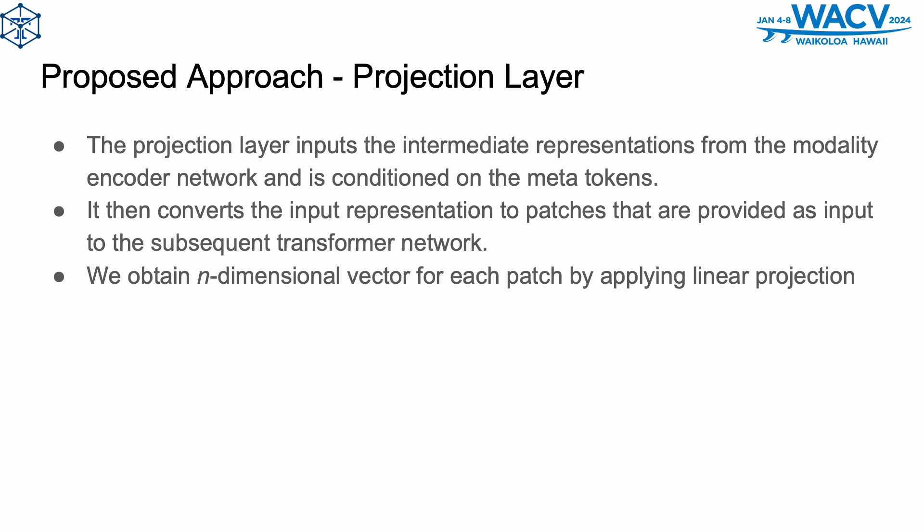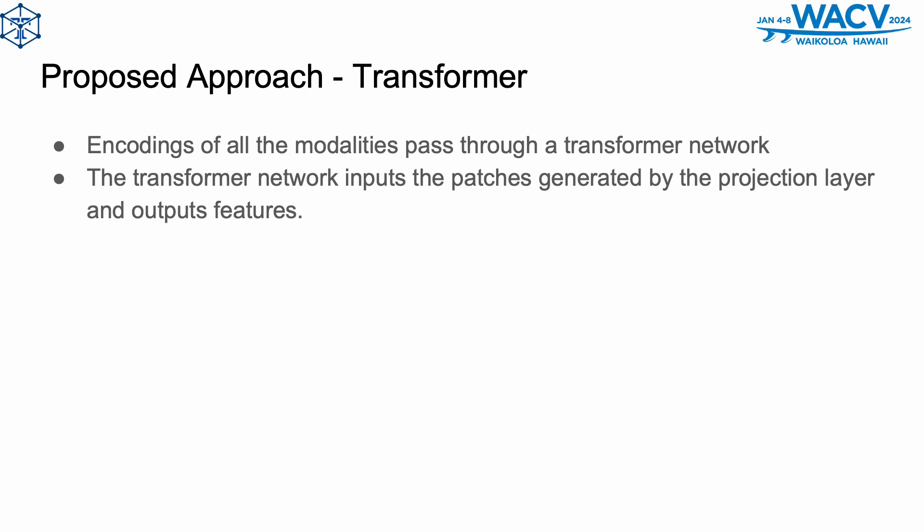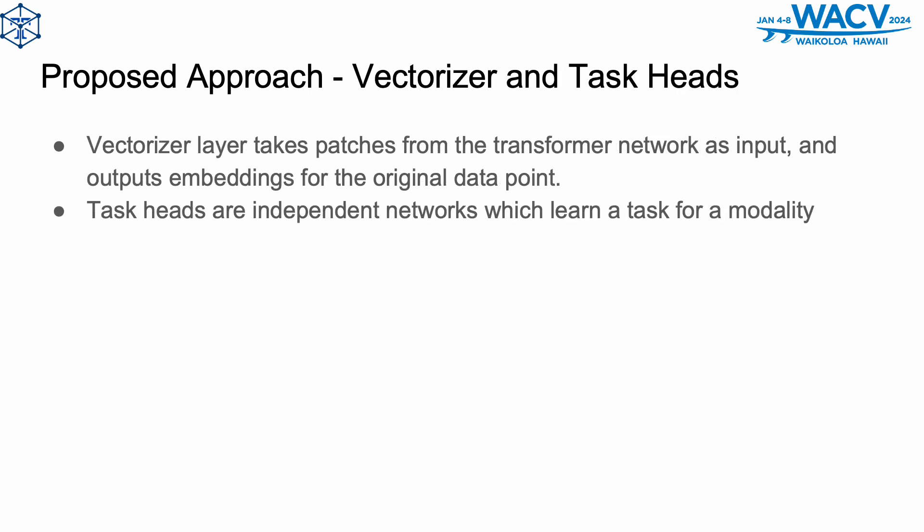Once we have the encoded modalities and the meta-information extracted, it is followed by a projection layer. The projection layer inputs the intermediate representation from the modality encoder network, is conditioned on the meta-tokens, and converts the input representation to patches provided as input to the subsequent transformer network. We obtain an n-dimensional vector for each patch by applying linear projections. The transformer network is the common part of the framework and acts as a bottleneck block. While different modalities may arrive through different encoders, they all pass through this shared transformer network, which inputs the patches from the projection layer and outputs per-patch features.